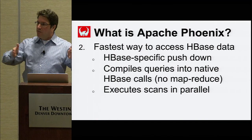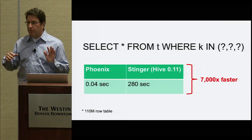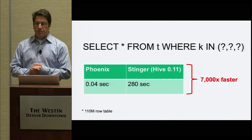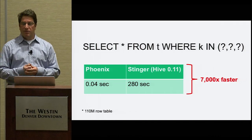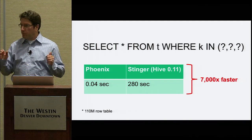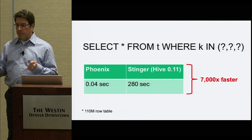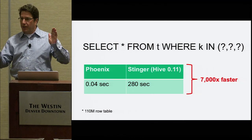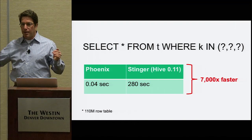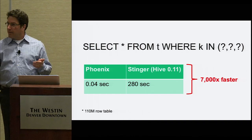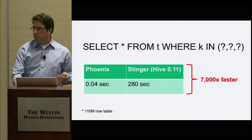We take those compiled scans and execute them in parallel on the client. How fast is Phoenix? As a point of reference: a simple query selecting three rows among just over 100 million rows by the primary key — Phoenix will do that in 40 milliseconds. Stinger, the latest version of Hive, does that in 280 seconds — so 7,000 times faster. That 40 milliseconds is constant time for this query, whereas in Stinger, as your data grows, that 280 seconds will grow linearly with the size of your data.